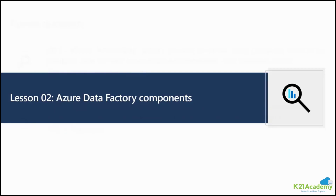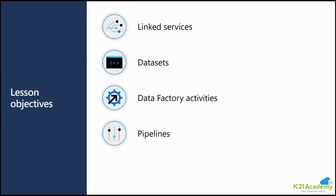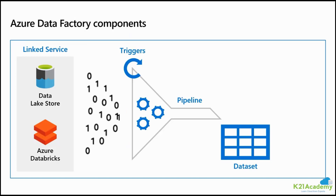Now coming to lesson number two — data factory components. In this lesson we'll talk more about linked services, dataset, data factory activity, and pipelines. In Azure Data Factory we have linked services, triggers, pipeline, and dataset. With linked services we connect to various data stores such as Azure Data Lake, storage account, Databricks, SQL database, Synapse, or any other. Triggers can be on schedule, event-based, or triggered manually. Whenever you trigger the pipeline it executes and all activities execute in one flow. Dataset is just the representation of the data in the real data store. In the monitoring section we can check for any errors.